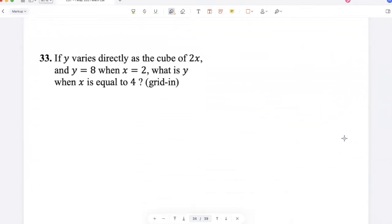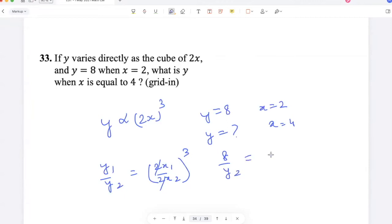If y varies directly as the cube of 2x, and y is 8 when x is 2, what is y when x is 4? y1 over y2 is 2x1 over 2x2 whole cube. The 2s cancel. So 8 over y2 is 2 over 4 whole cube, which is 1 by 8. So y2 is 64.